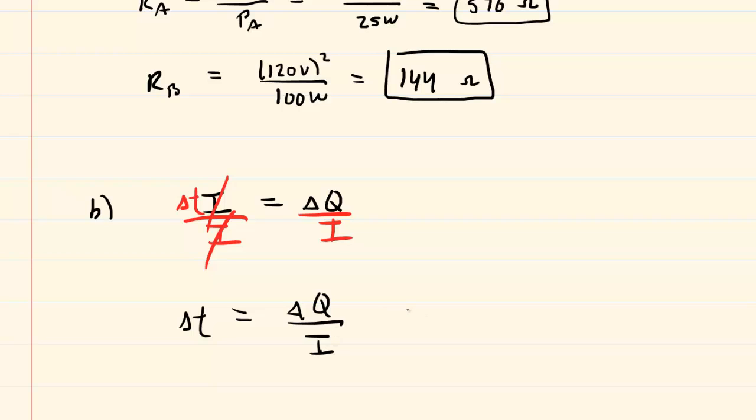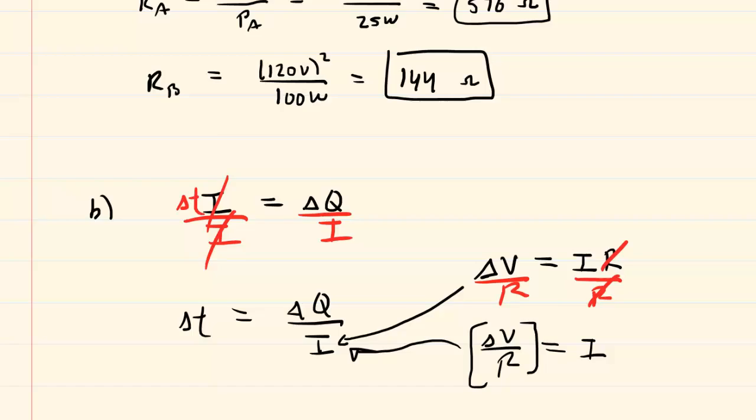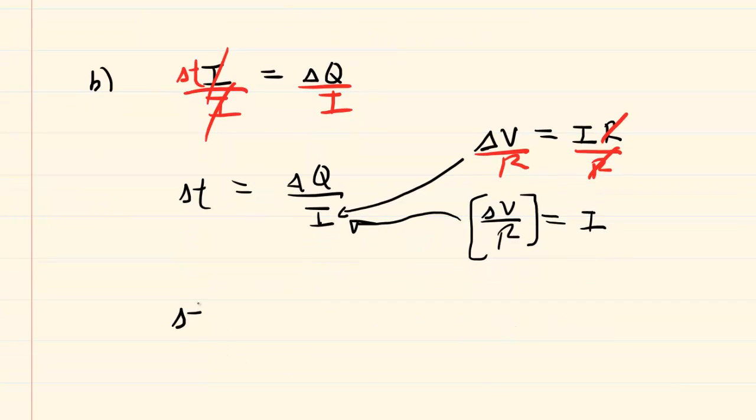Now, we don't have the current for light bulb A, but, of course, there is a way to obtain the current. We know from Ohm's Law that the potential difference is equal to the current times the resistance. So if we divide both sides of this equation by the resistance, then we can see that the current I is equal to delta V divided by R. So we'll plug this expression in for the current I. And this will give us a way of finding the time interval in terms of all known quantities.